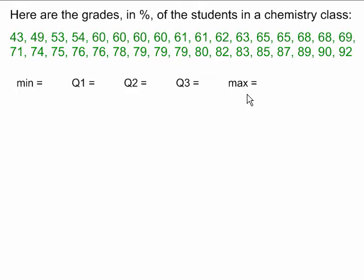The easiest ones to find are the minimum and the maximum, so we will find those first. The minimum is the lowest number in the set of data. In this case, that's 43. And the maximum is the highest number in the set of data, which in this case is 92.